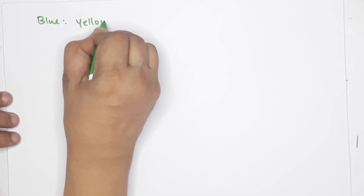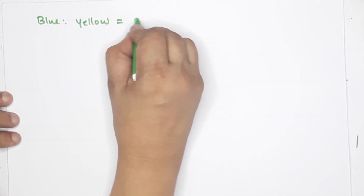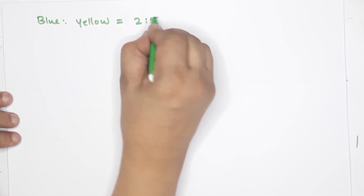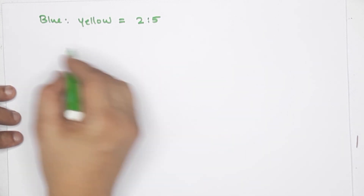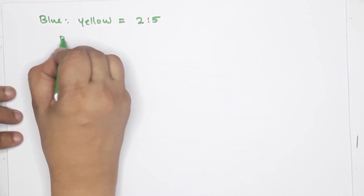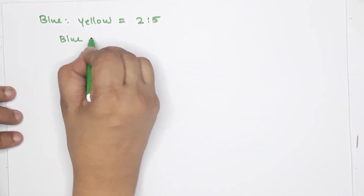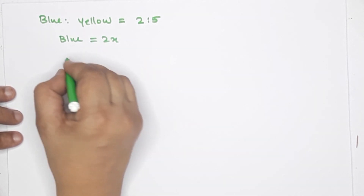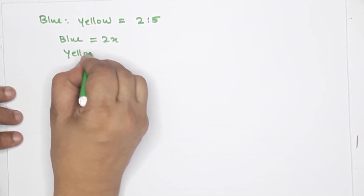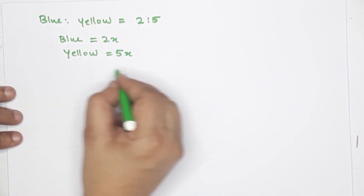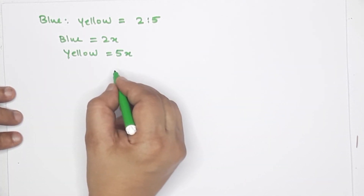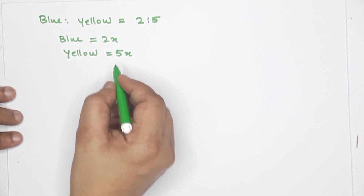Blue is to yellow. Blue is 2 and yellow is 5 — this is the ratio they are mixed in to make a new color. Blue is 2x and yellow is 5x. The difference between them is 6 liters — yellow is more than blue by 6 liters.